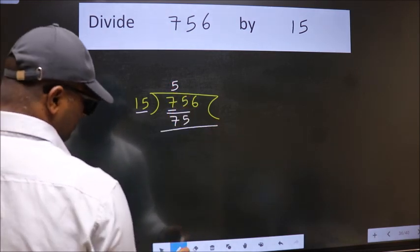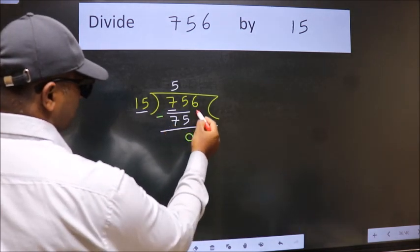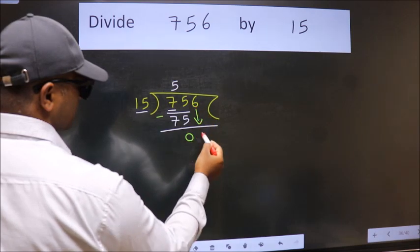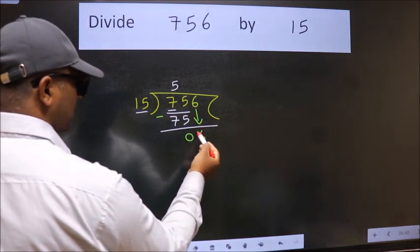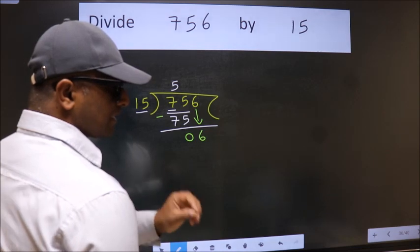Now we should subtract. We get 0. After this, bring down the beside number. So 6 down. After this step, the mistake happens and the mistake is this.